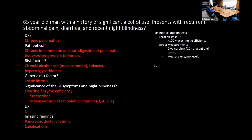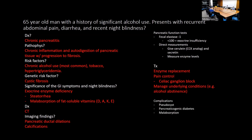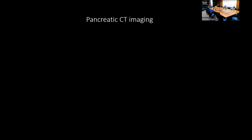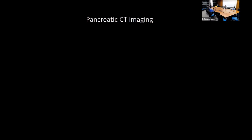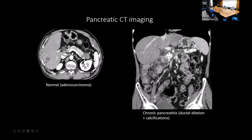Treatment of chronic pancreatitis includes enzyme replacement therapy (which also helps with pain by reducing pancreatic stimulation), insulin or diabetes management, managing underlying conditions, and pain control. Celiac ganglion block is an option for long-term pain control. CT images show extensive calcifications in chronic pancreatitis and significantly dilated pancreatic duct compared to normal.